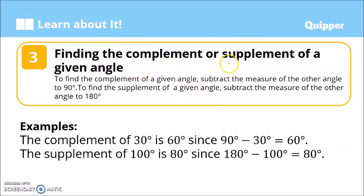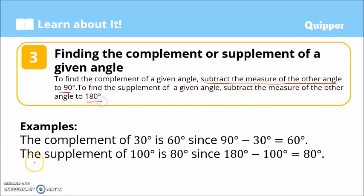Now, finding the complement or supplement of a given angle. To find the complement of a given angle, subtract the measure of the angle from 90 degrees. And to find the supplement of a given angle, subtract the measure of the angle from 180 degrees.